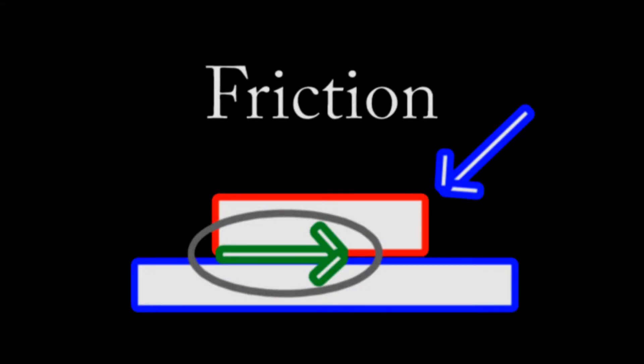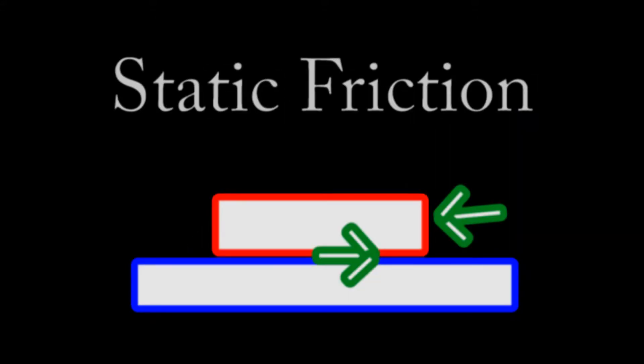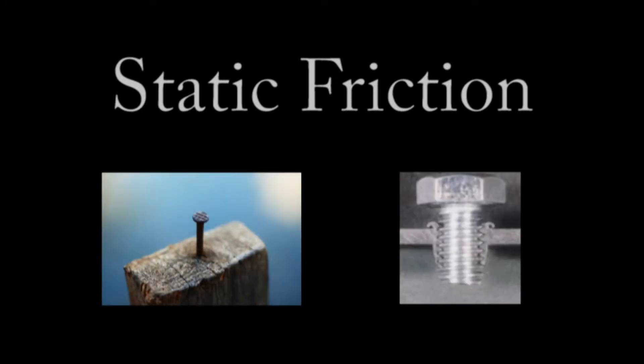Friction is the force resisting the relative lateral motion of surfaces in contact. Static friction, the friction felt between two solid surfaces that are not moving relative to each other, is what keeps nails and screws in place.